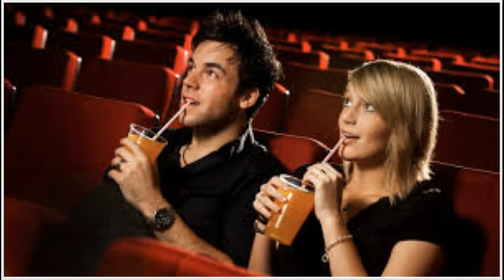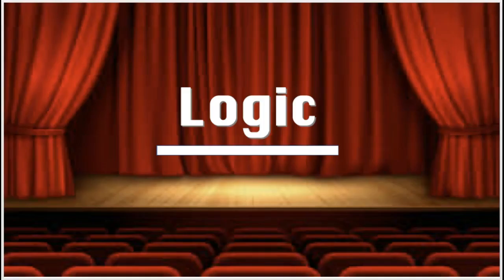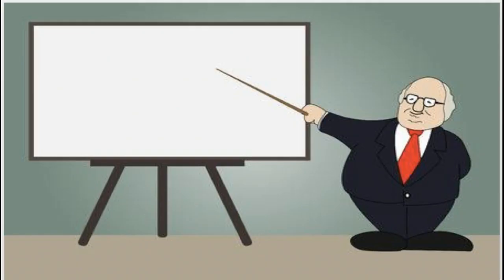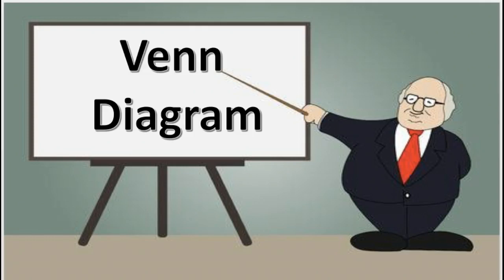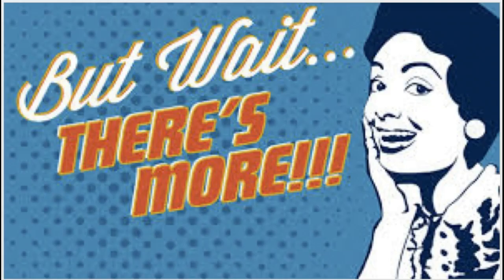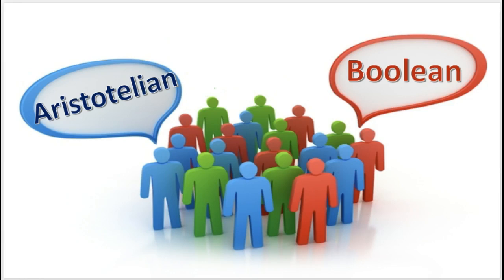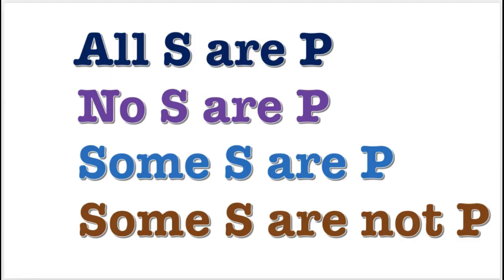Ladies and gentlemen, welcome back to Logic. The topic of this video is the Venn Diagram. But first, I want to quickly talk about the Aristotelian versus the Boolean interpretation of categorical propositions.